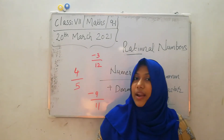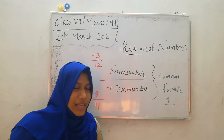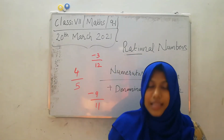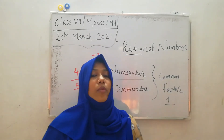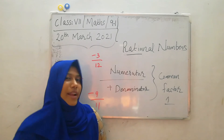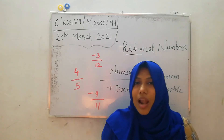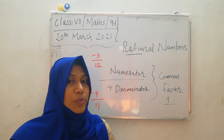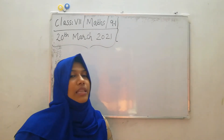So we studied what a rational number means and what the standard form of a rational number is. Simply, we can say that all integers and all fractions are rational numbers. But all rational numbers are not fractions — only those with whole numbers are fractions. I think you now understand the difference between rational numbers and fractions. Now we can check addition, subtraction, multiplication, and division.